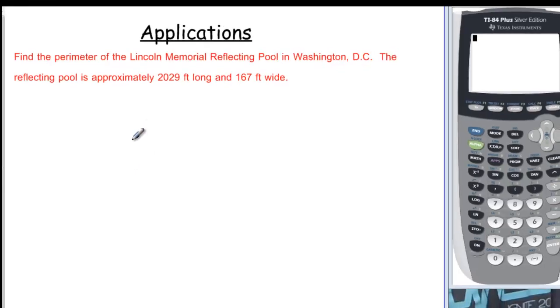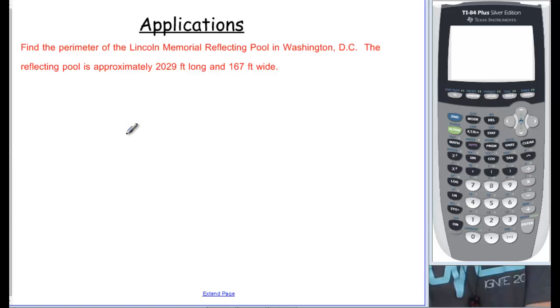This video is going to talk about how to translate applications into algebra and then be able to simplify the expression you make. Our first example: Find the perimeter of the Lincoln Memorial Reflecting Pool in Washington, DC. The reflecting pool is approximately 2,029 feet long and 167 feet wide.